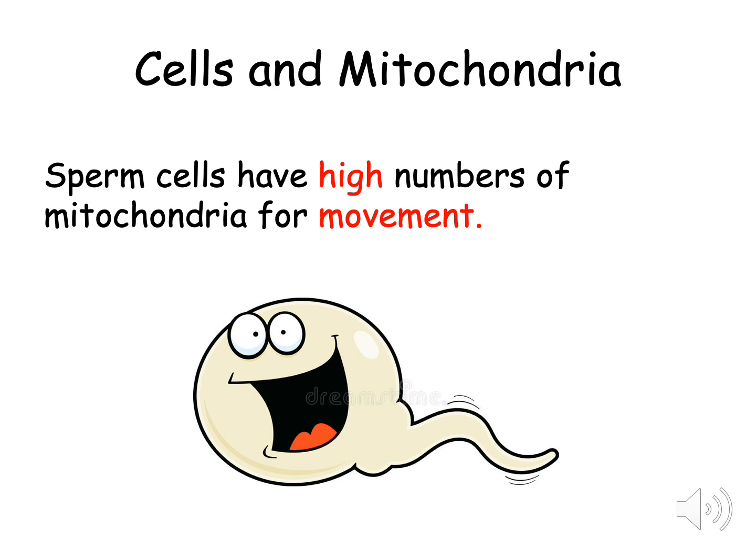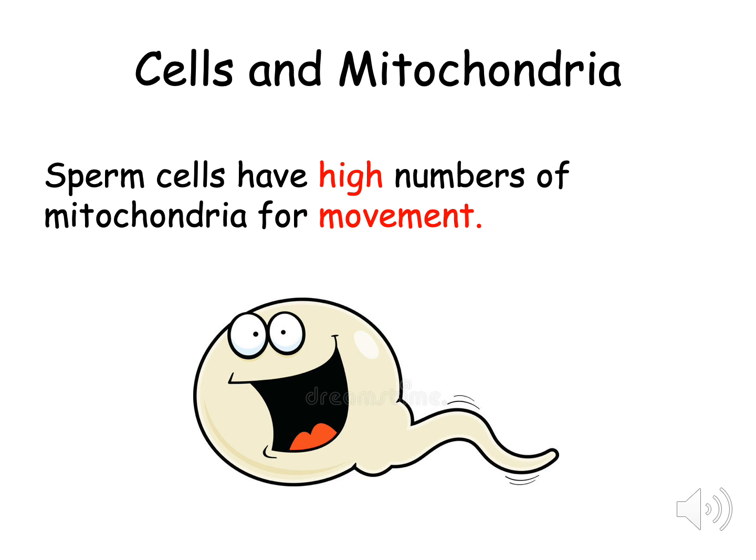Sperm cells also require a lot of energy to move their tail so they can swim to the egg and fertilize it. This means that they have a high number of mitochondria to create all of that energy. Skin cells however, do not require a lot of energy. This means that they have a low number of mitochondria within their cells.